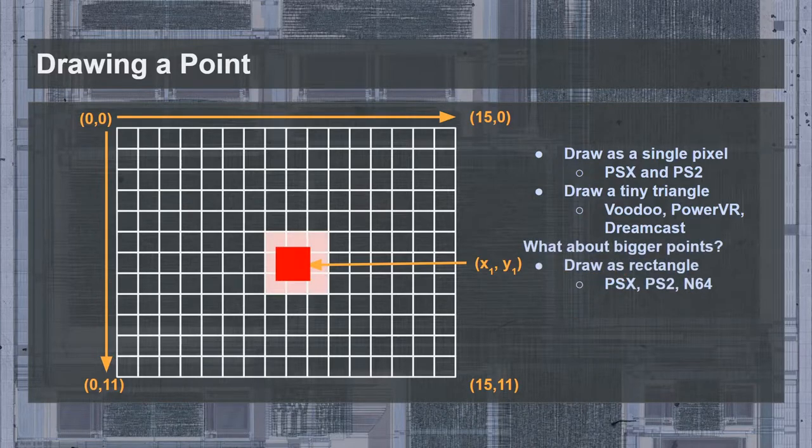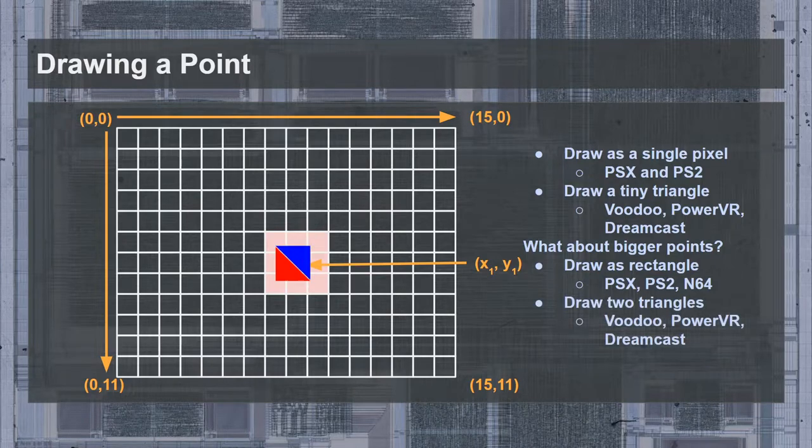This is also how the N64's GPU would draw larger points. For the GPUs that could only draw triangles, you can build up a square by using two triangles. This is what the Voodoo and PowerVR-based GPUs did. Modern GPUs also use this triangle-based method, since it simplifies what the hardware needs to do. This means that when the Graphics API or a geometry shader asks to draw points, they internally get translated into triangles.